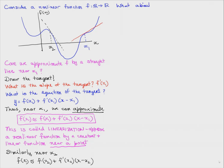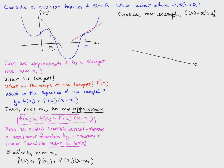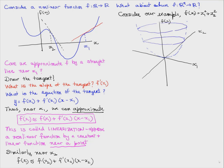Now, what if the domain of the function is not the reals, but some vector space R^n? Consider our example from the last video: f of x equals x1 squared plus x2 squared. The graph of this function is a surface that actually looks like a ball. If we take a point x star and see how we can approximate this ball function by a linear function near x star, that linear function is not a straight line, but it's a plane.